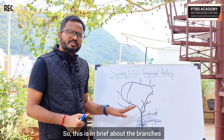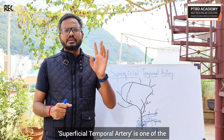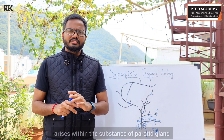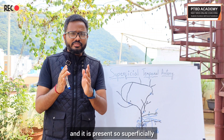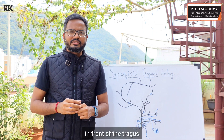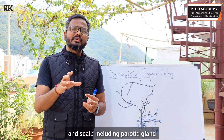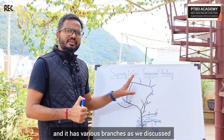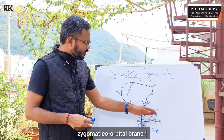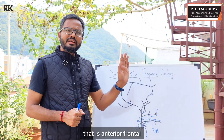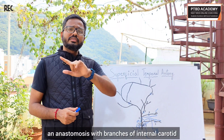To summarize: the superficial temporal artery is one of the terminal branches of the external carotid artery. It arises within the substance of the parotid gland and ascends upwards along with the auriculotemporal nerve. It is present so superficially that you can feel its pulsations in front of the tragus. It gives off branches providing arterial supply to the skin and muscles of the face and scalp, including the parotid gland and temporomandibular joint. Its branches include the parotid branch, anterior auricular branch, transverse facial branch, zygomatic orbital branch, middle temporal branch, and the two terminal branches — anterior frontal and posterior parietal. The anterior frontal branch forms an anastomosis with branches of the internal carotid, demonstrating a communication between external and internal carotid branches.